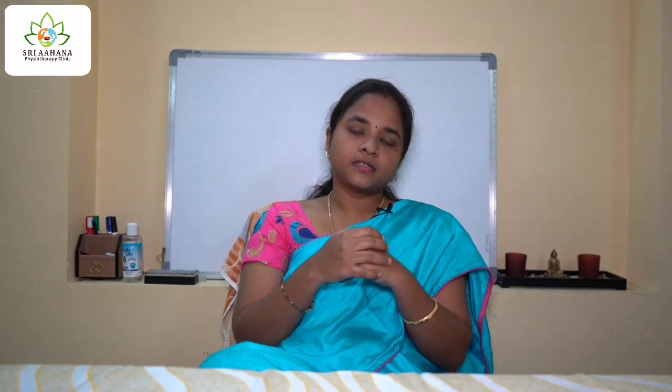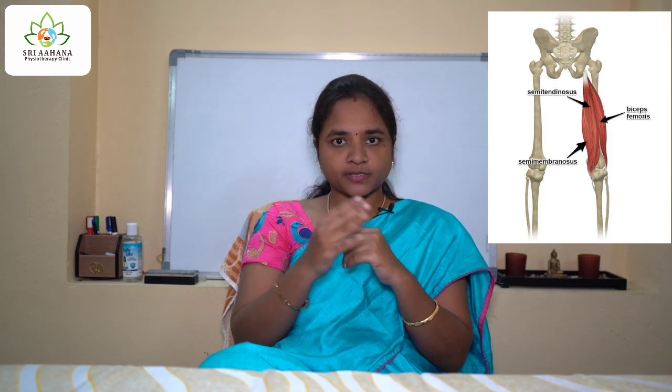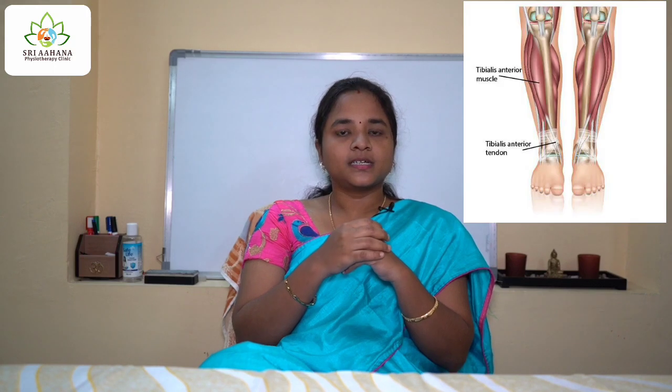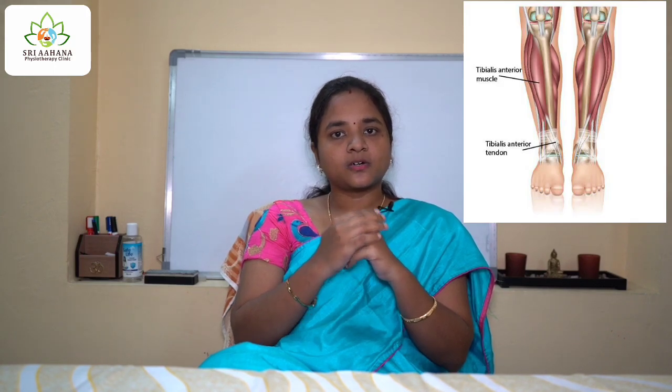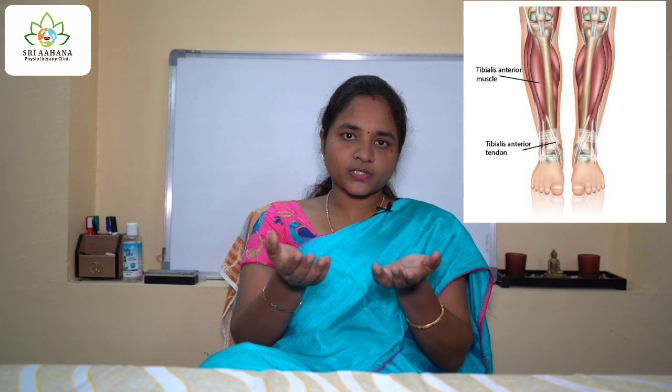The next classification is based on location. For example, biceps femoris means the muscle is located at the femur, so it is named biceps femoris. Another example is tibialis anterior, which indicates the muscle is present on the anterior tibia. The location of the muscle is embedded within the name itself, making it easy to remember when you study.